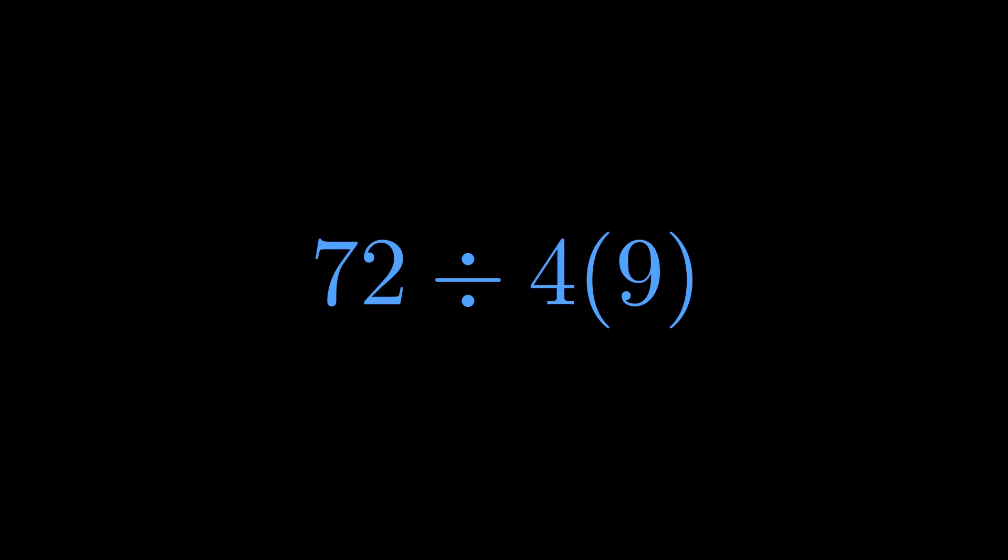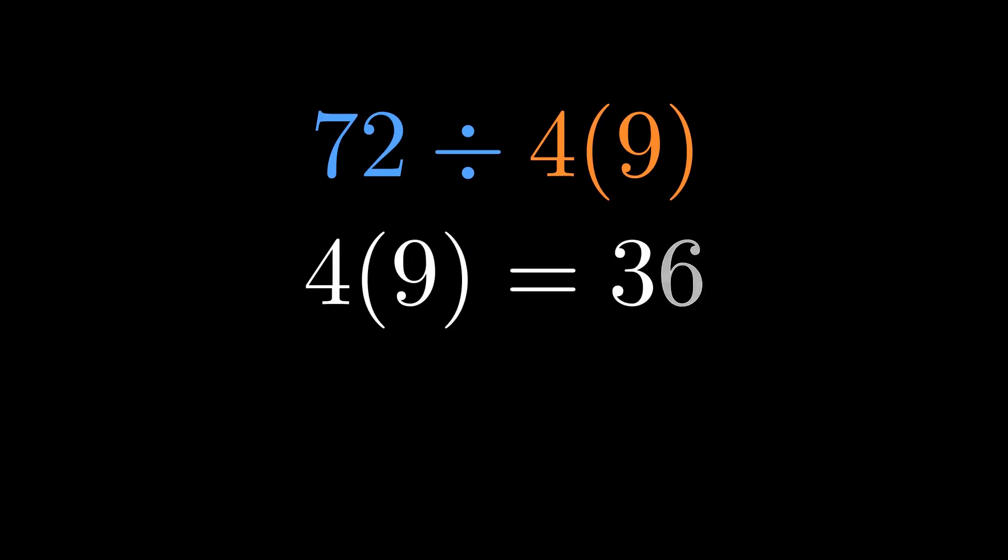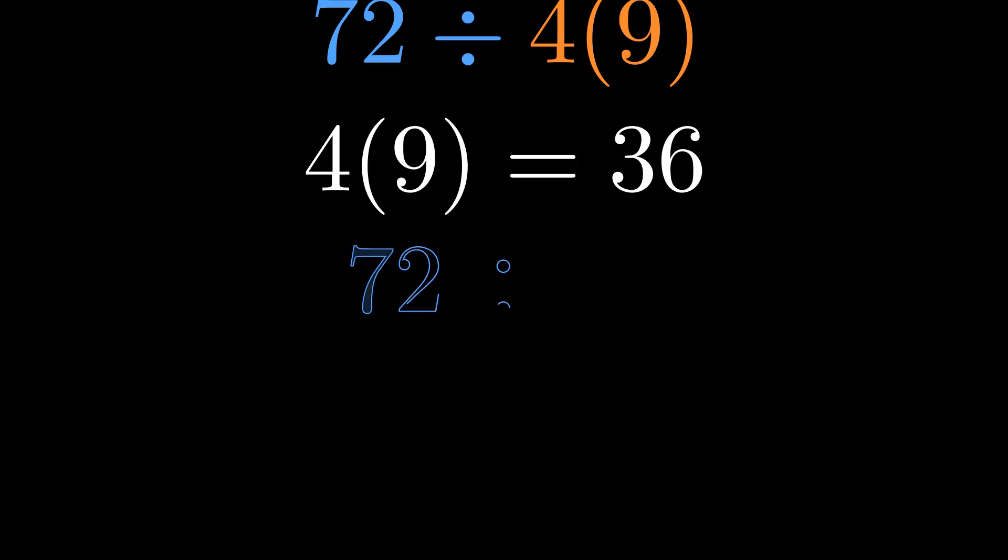And here's the key moment where people diverge. There's something about the way 4 is written right next to the 9. No multiplication sign, just 4 parenthesis 9. It feels like they belong together. This is implied multiplication, and many people believe it should be done first. So if we do 4 times 9 first, we get 36.